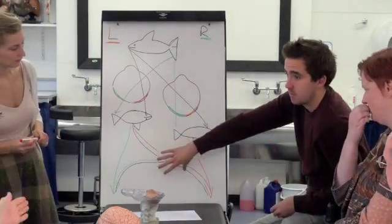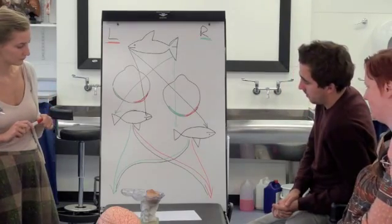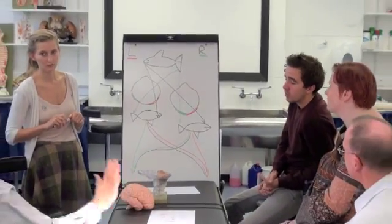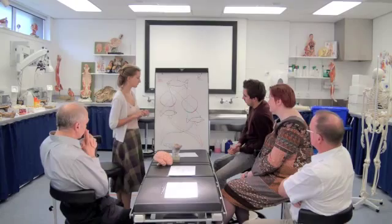And this part is the optic chiasm, carrying the fibers from the nasal portion of the retina or the temporal portions of the visual field, both the same thing. Nasal retina, temporal visual field crossing at the optic chiasm.